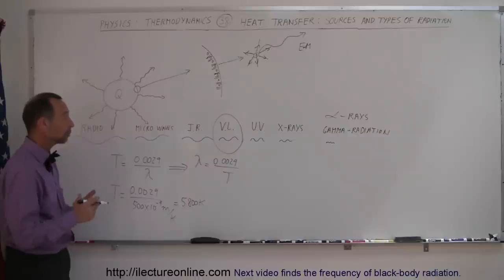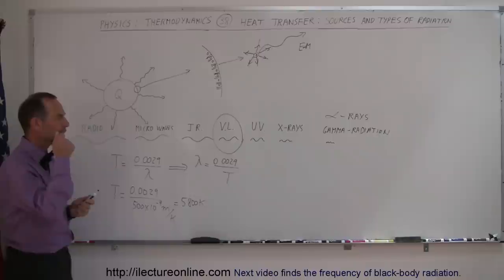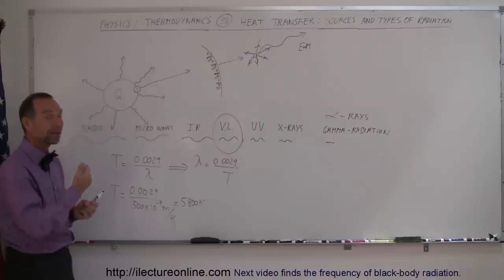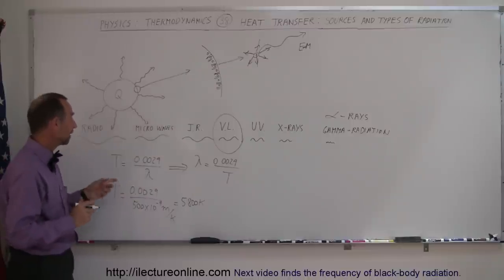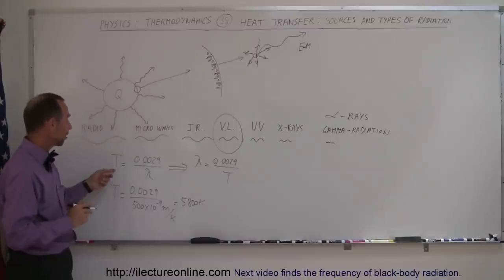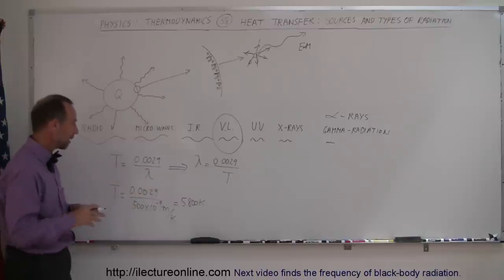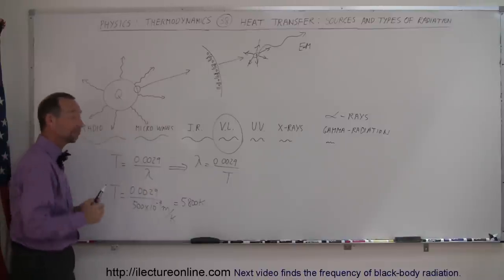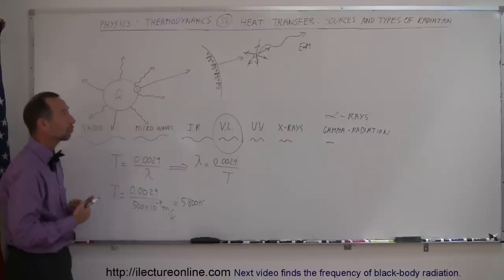Conversely, if you want to measure your body temperature at the doctor's office, they put an infrared detector in your ear and measure the wavelength of radiation coming from inside your body. From that they calculate your body temperature — the thermometer measures the wavelength and finds the corresponding temperature. That relationship works for the sun as well as for the human body.